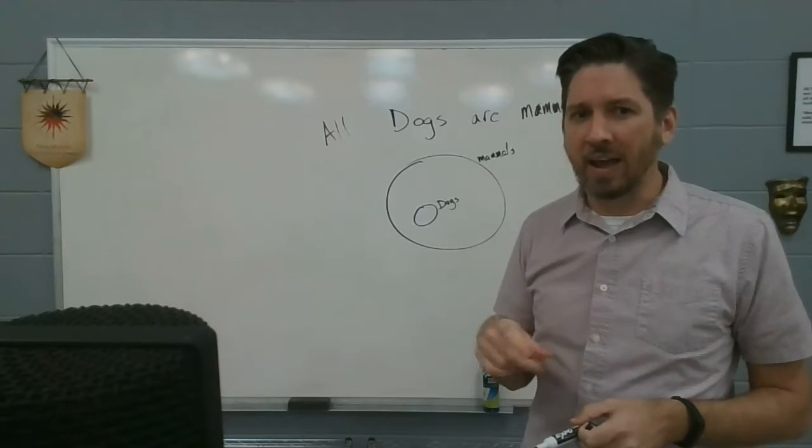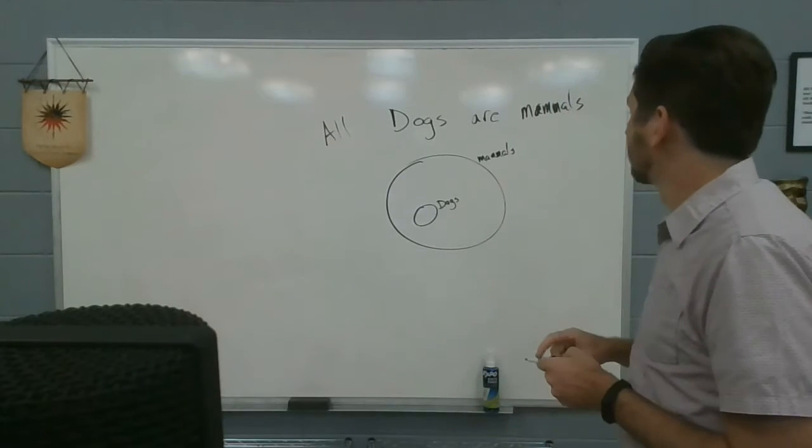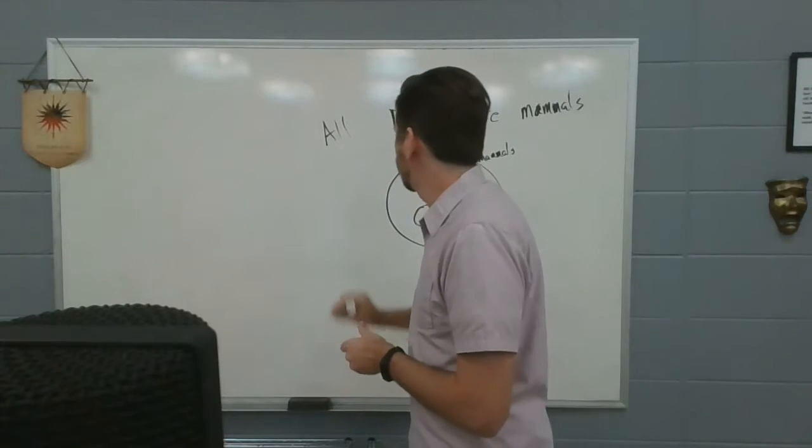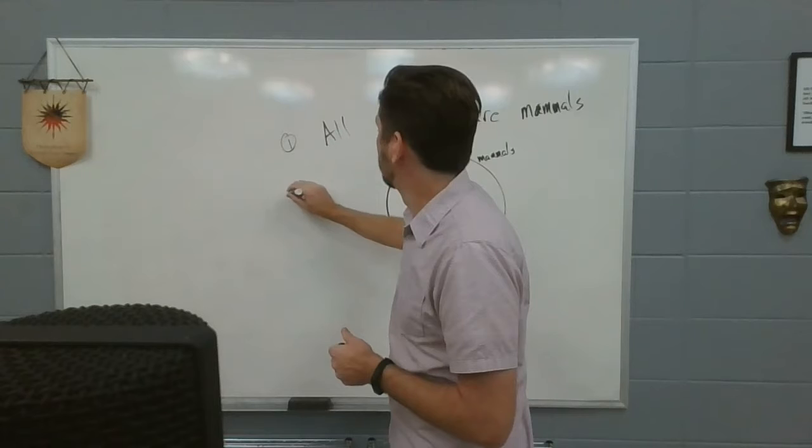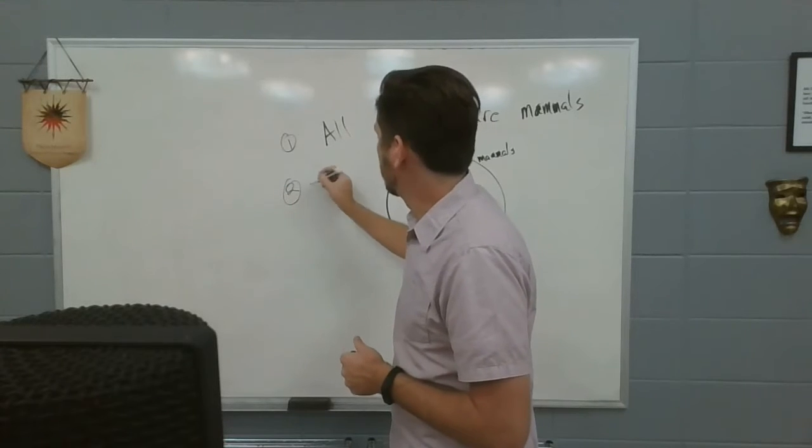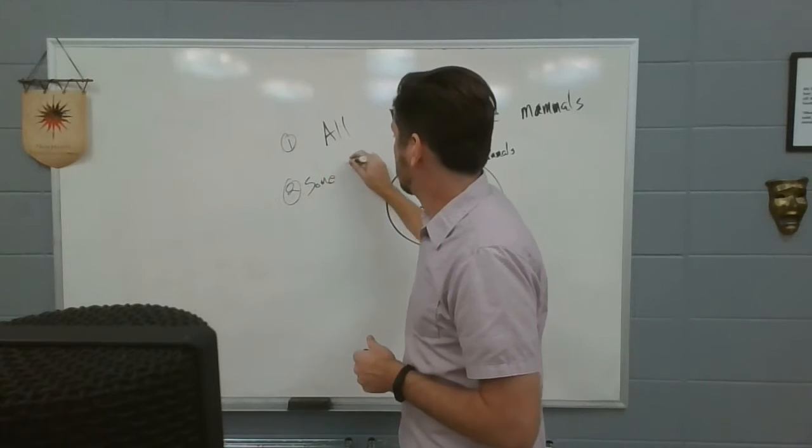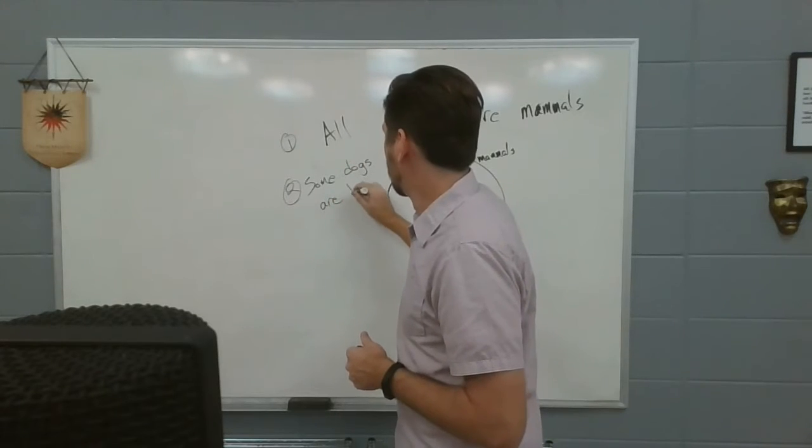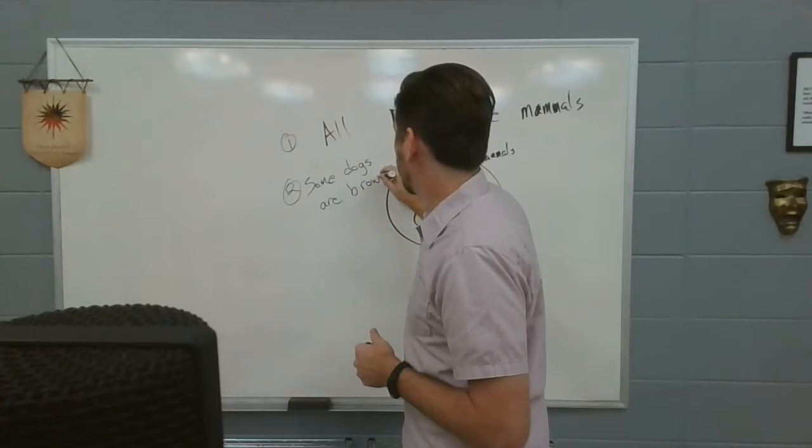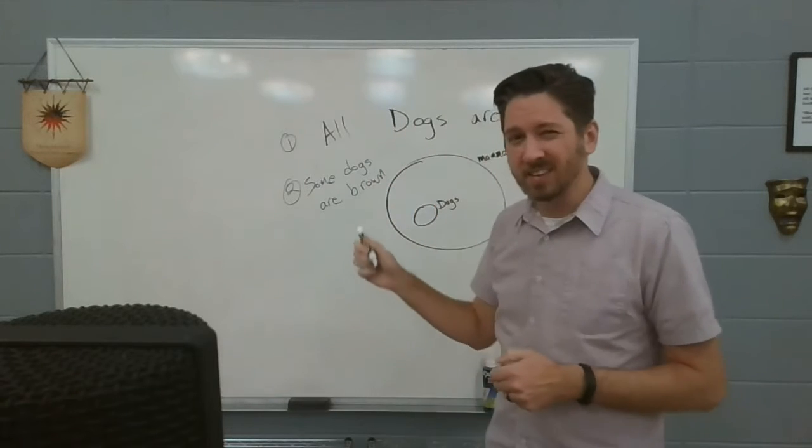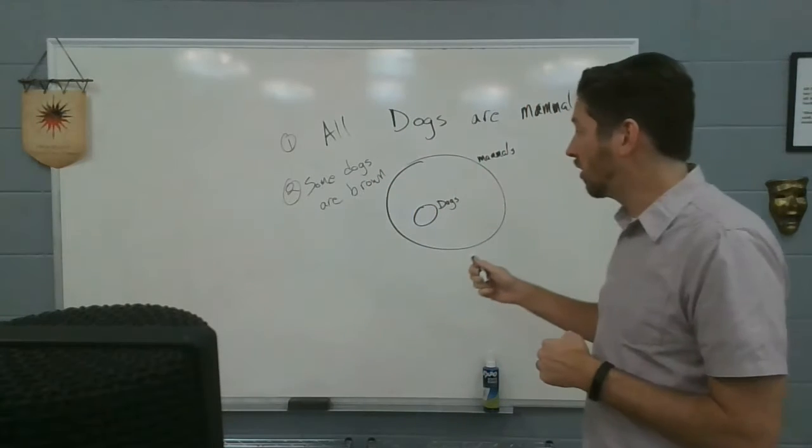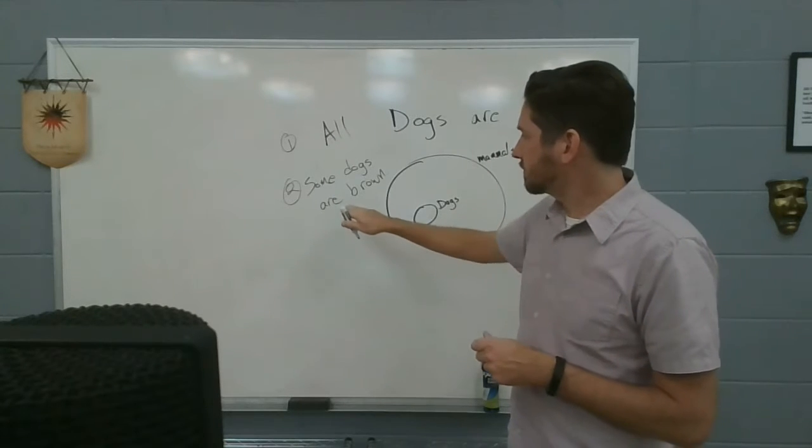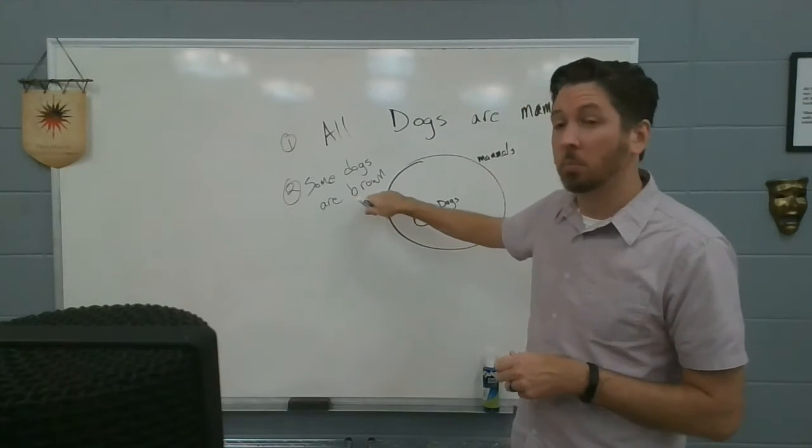It gets tricky when you start adding other premises to it. So, if I said all dogs are mammals, there's my first premise. My second premise, number two, I'm going to say some dogs are brown. So, now I have a second sentence that I have to draw on this same diagram. So, I've got a new category here. Brown things.